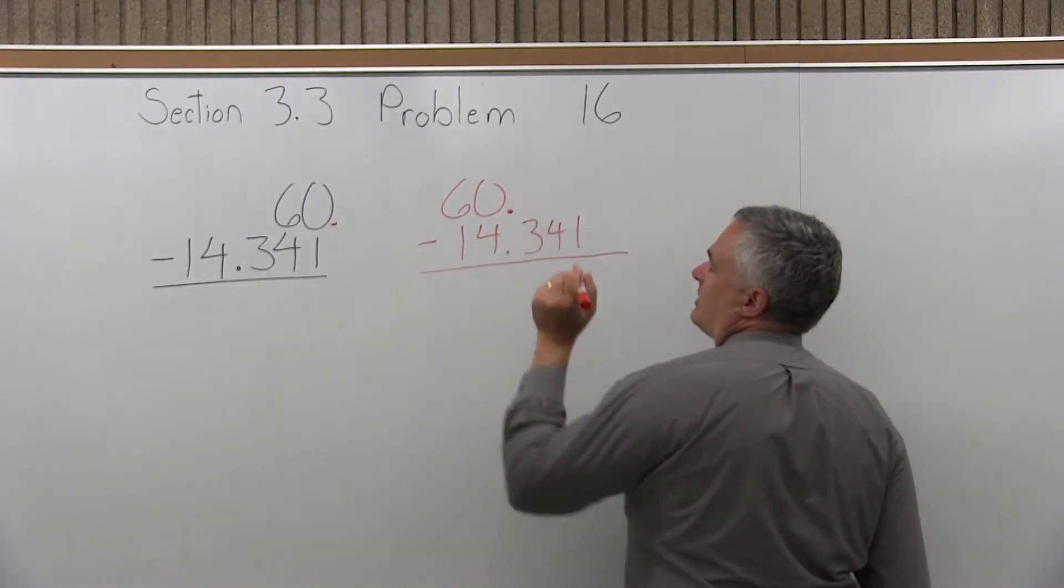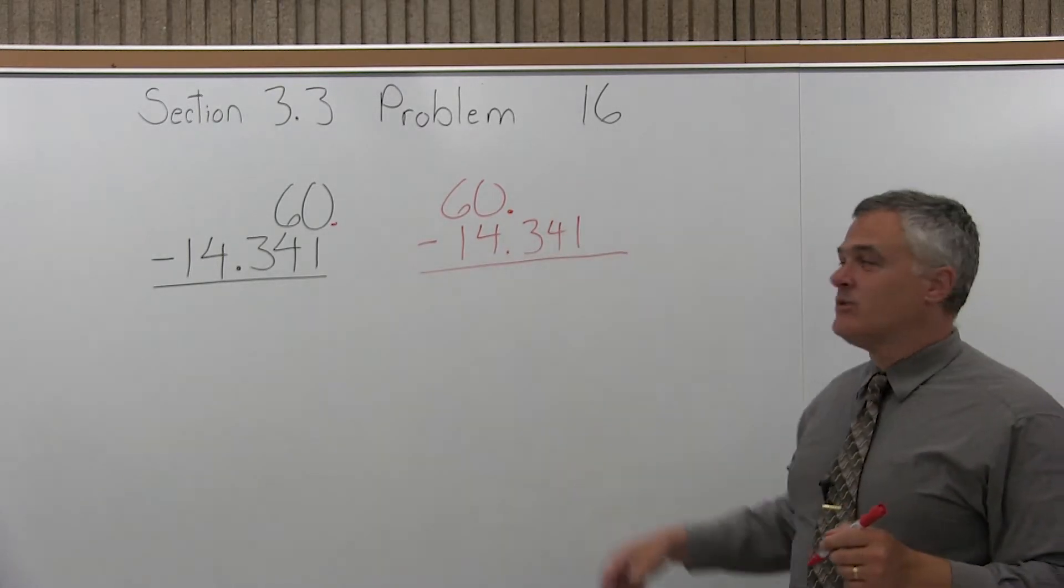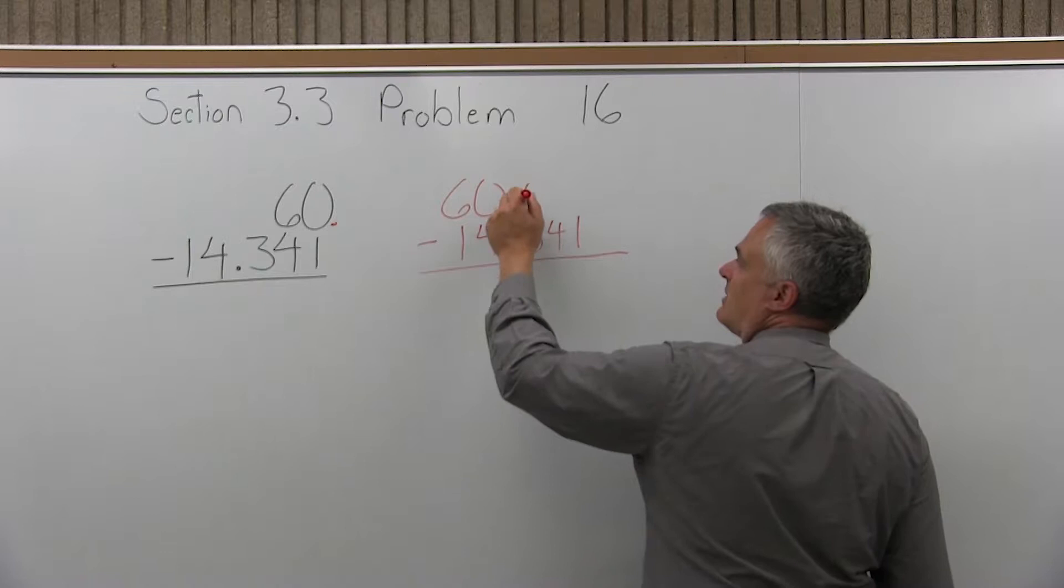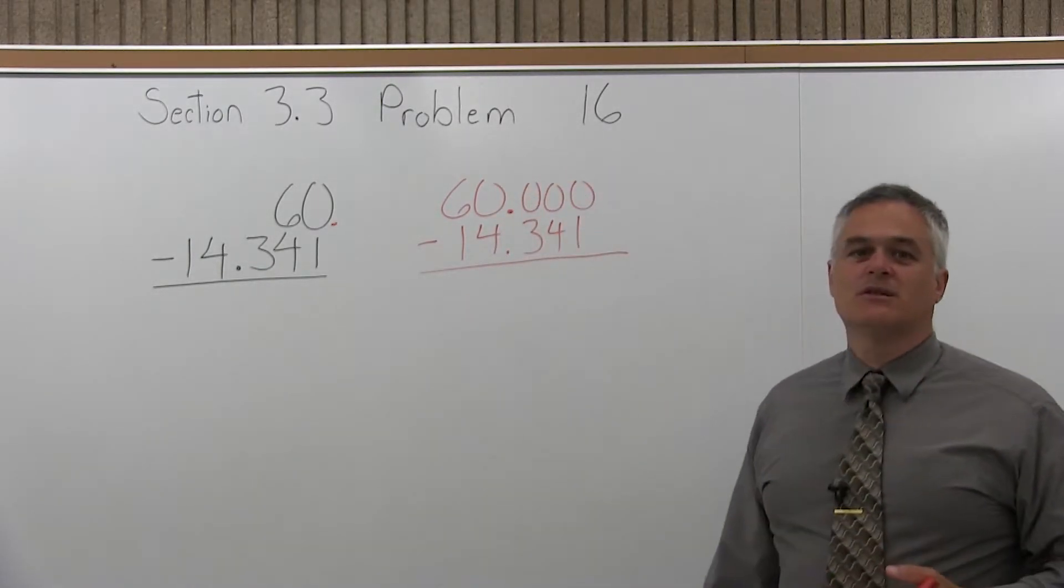Now put the decimal after the 60. See, now I can start my subtraction, but to subtract, there's nothing really written after the 60, so you just fill in zeros. I have three digits under it, so I just put in three zeros, and now I can start subtracting.